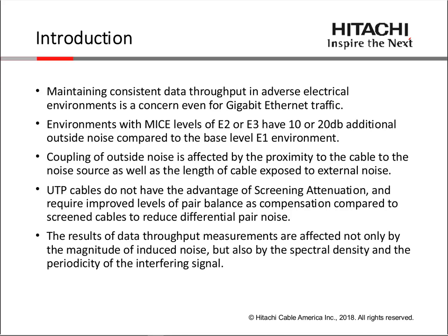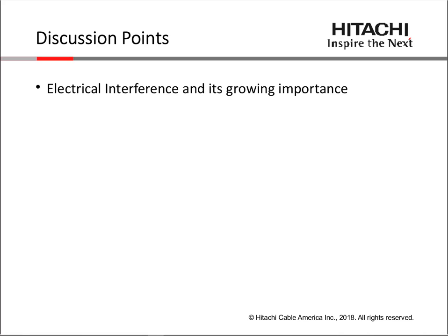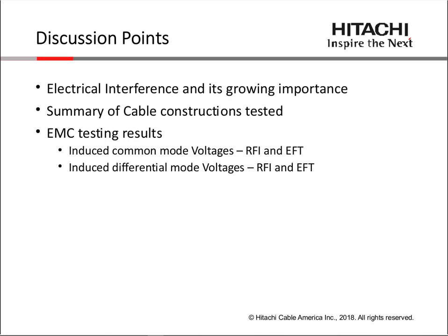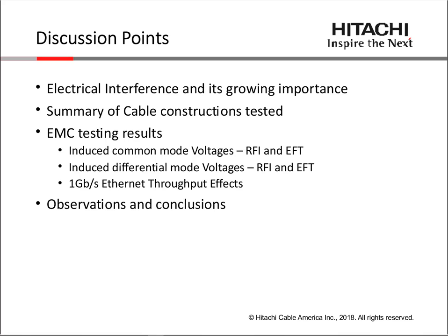We also looked into spectral density and the temporal factors and the interfering signal, because we believe that different types of signals would have different amounts of impact on Ethernet traffic. We have growing importance of electrical interference and more critical applications. We're going to talk about the summary of cable constructions tested, the EMC testing results, the RFI and EFT differential and common-mode voltages measured on the cable, the effects on Ethernet throughput, and we'll conclude with observations and conclusions.